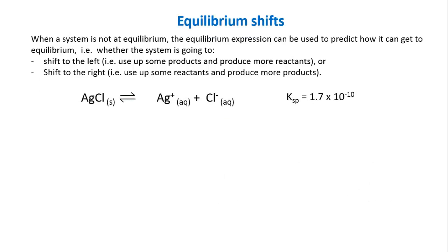When a system is not at equilibrium, the equilibrium expression can be used to predict how it can get to equilibrium. We can use the equilibrium expression to predict whether the system is going to shift to the left — that would mean using up some products and producing more reactants, the reverse reaction — or if it's going to shift to the right, the forward reaction, using up some reactants and producing more products.